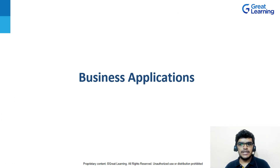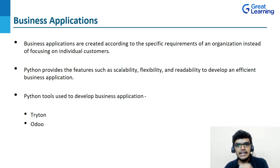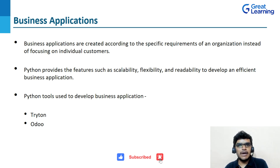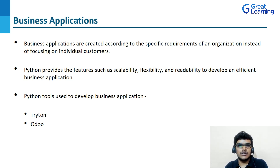Now let's see Python use in business applications. Business applications are created according to the specific requirements of an organization instead of focusing on individual customers. Python provides special features such as scalability, flexibility, and readability, which are required to develop efficient and fully functional business applications. The first tool is Tryton, which is a three-tier high-level general-purpose platform application used to develop business applications. Odoo is an all-in-one management software that forms a complete suite of enterprise management applications.